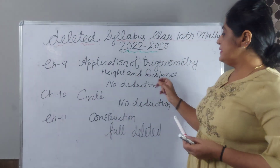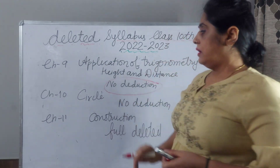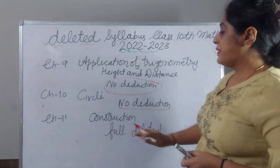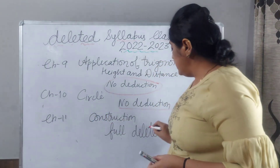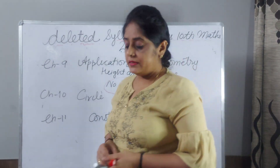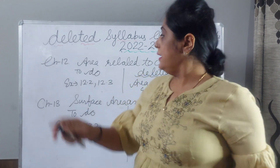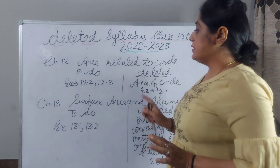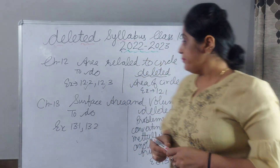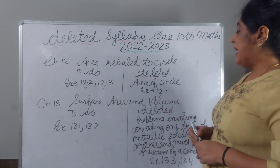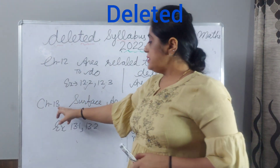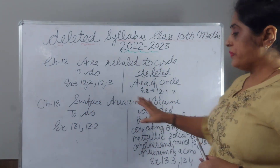Chapter 9, Application of Trigonometry — Heights and Distances: there is no deduction; you have to do all of this chapter. Chapter 10, Circles: no deduction. Chapter 11, Construction: this chapter is fully deleted; you have to not do construction at all. Chapter 12, Areas Related to Circles: you have to do exercise 12.2 and 12.3. What is deleted: area of a circle — exercise 12.1 is deleted from your syllabus.